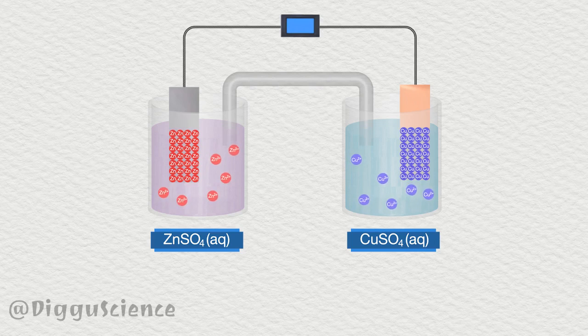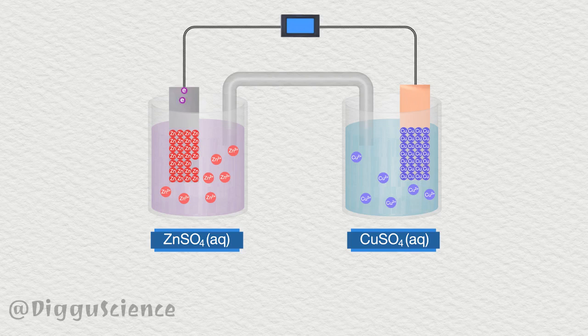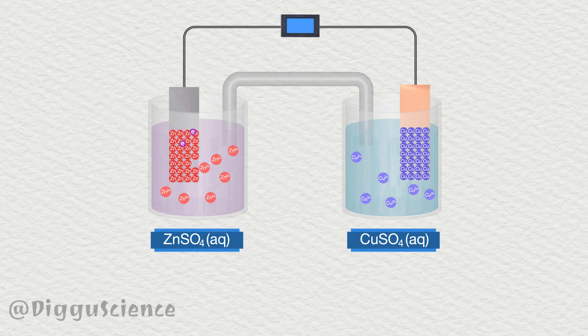Once everything has been connected, the Zn atom on the zinc sheet releases two electrons to become a Zn2+ ion. These ions will be dissolved into the water. Meanwhile, two electrons will flow through the voltmeter towards the copper sheet.